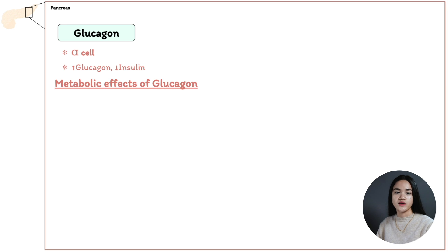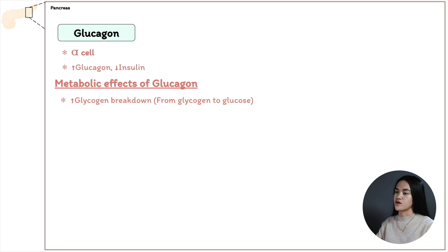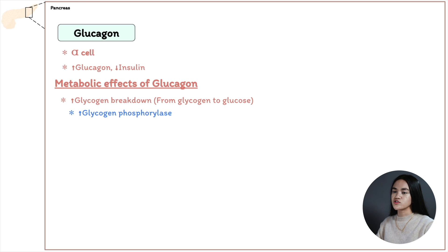The cell's job is to maintain ATP concentration, so when glucose levels decrease, glucagon signals the cell to increase glucose in multiple ways. First, it triggers glycogen breakdown, or glycogenolysis, in the liver to yield glucose. Glucagon stimulates glycogen phosphorylase, the enzyme that breaks down glycogen to glucose.